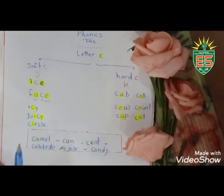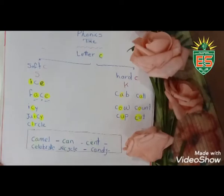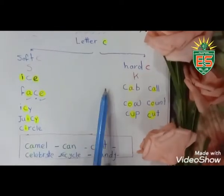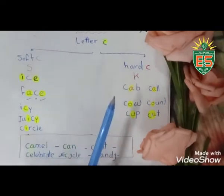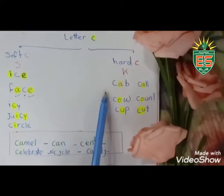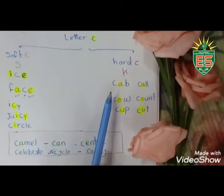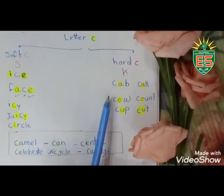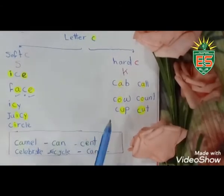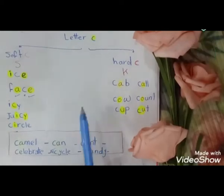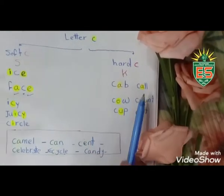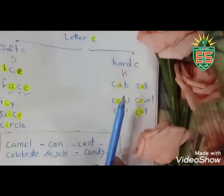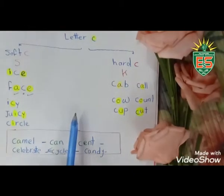And now let's go to hard C. Look here, let's read this word together. Here I have O after C, so I pronounce C as 'k'.